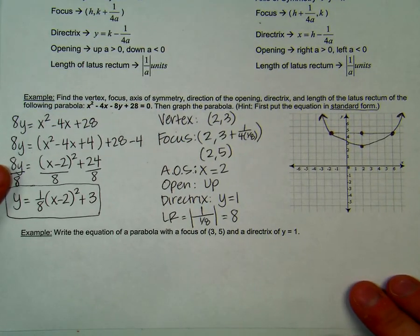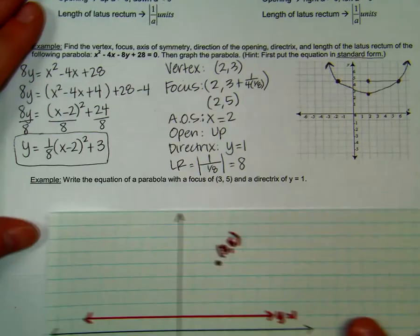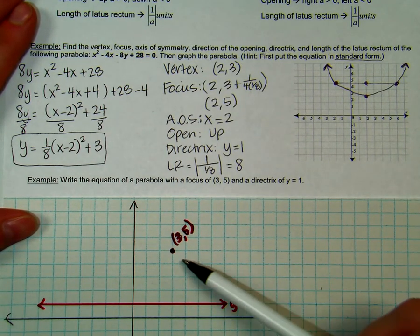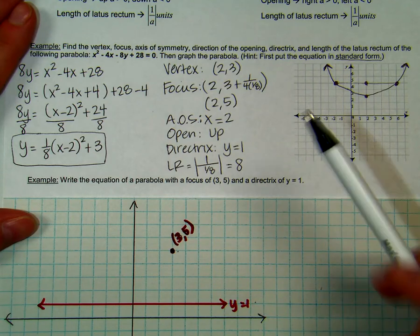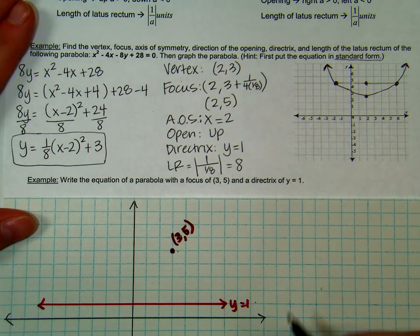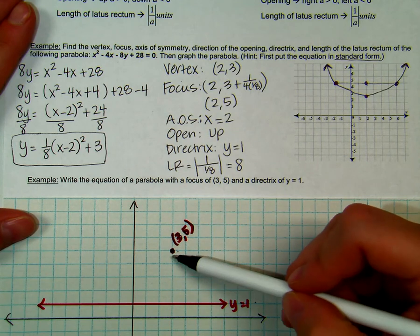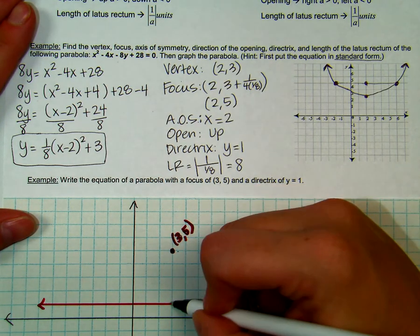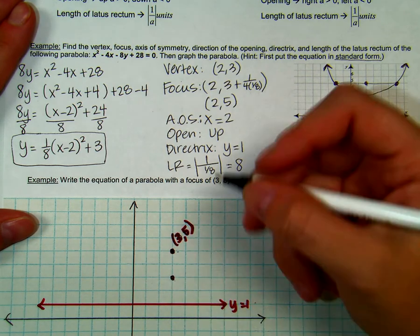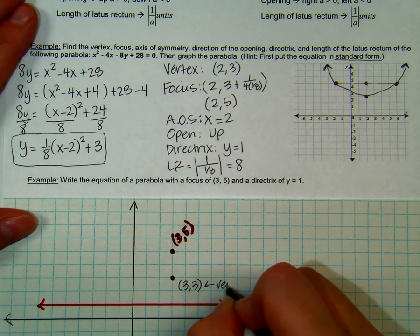Now on to the next example. Write an equation of a parabola with a focus of (3, 5) and a directrix of y equals 1. We can sketch this to see what we're looking at: our focus is (3, 5) and our directrix is y equals 1, which tells us immediately that we have a vertical parabola. Let's find the vertex first. We know the vertex is directly in between the directrix and the focus — there are four units in between, so going halfway puts us at the ordered pair (3, 3).